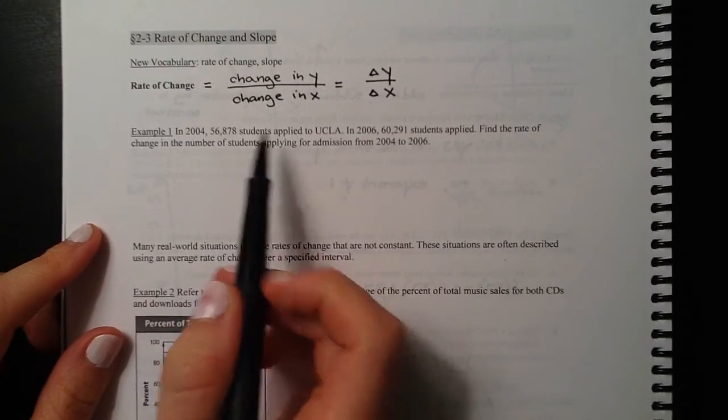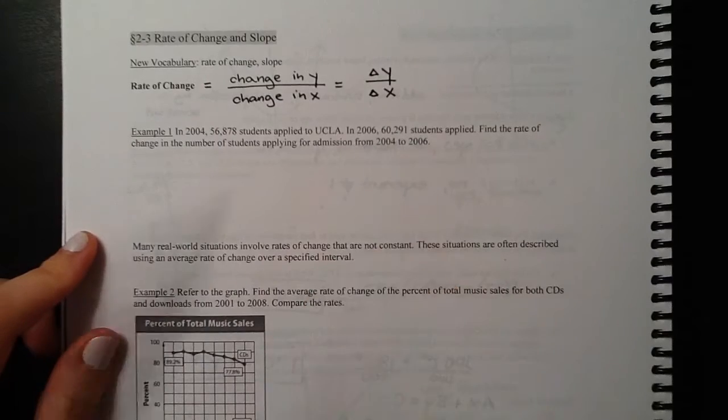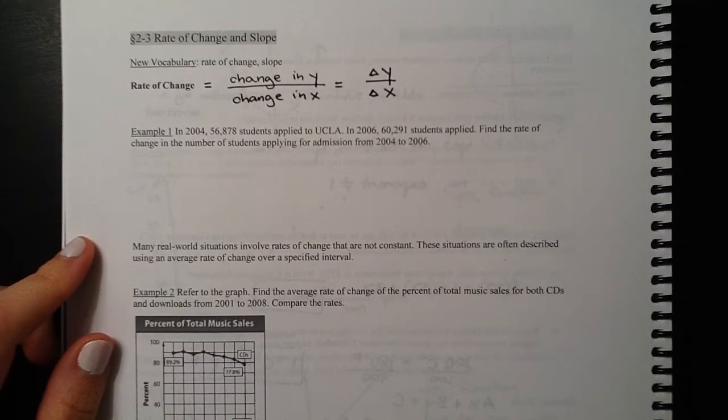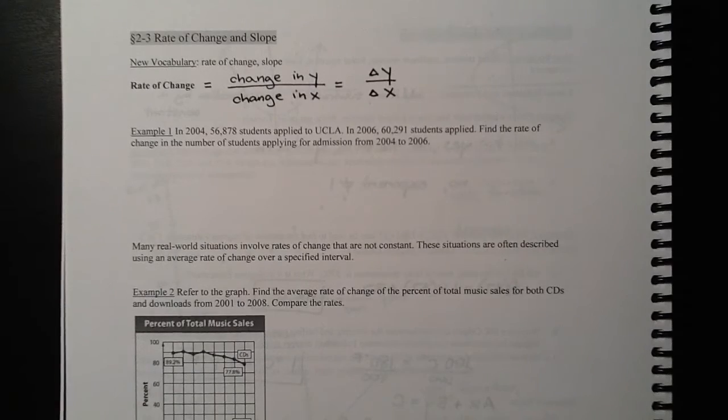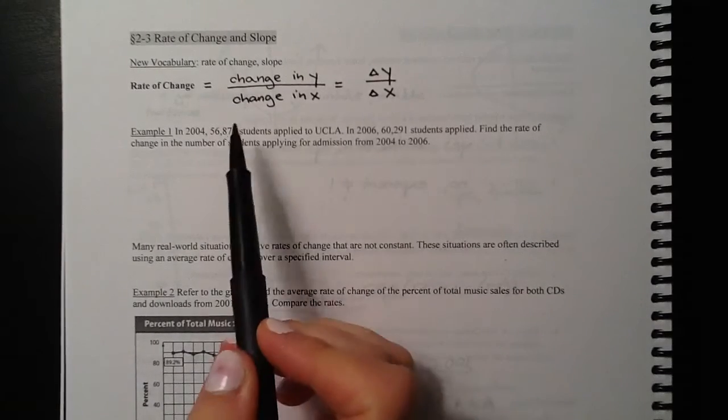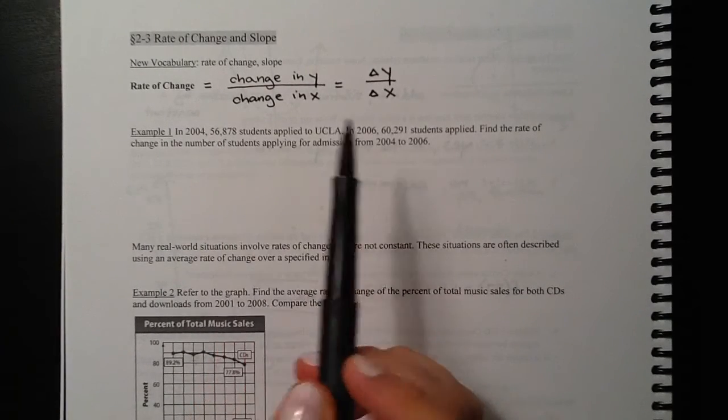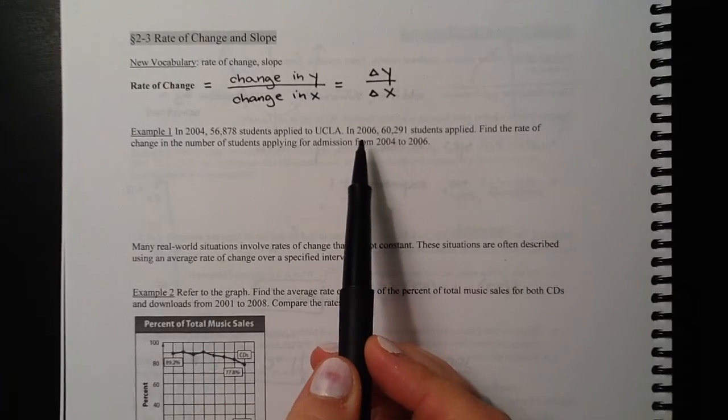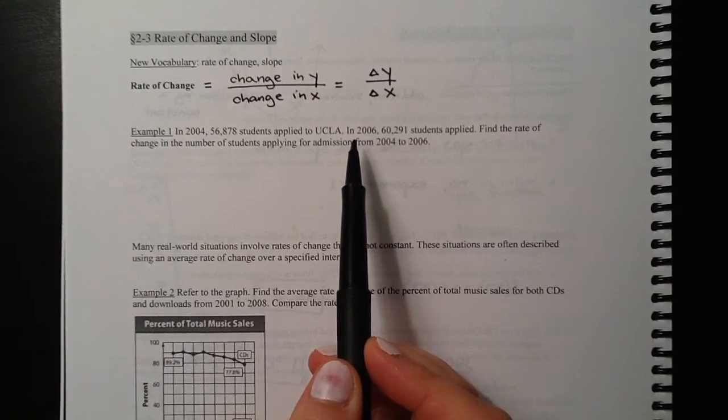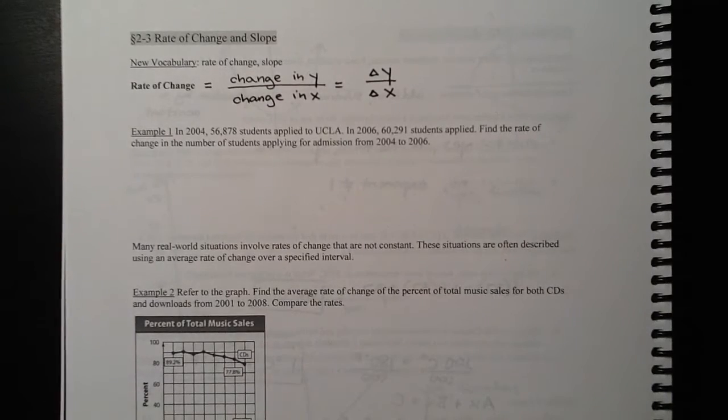It's got the number of students that applied to UCLA in 2004 compared to the number in 2006. And then we want to find the rate of change in the number of students applying for admission. So you can tell here that there's an increase. There's fewer students in 2004, more students that applied in 2006. So we want to see what the rate of change was over the number of years. So we set up change in y over change in x.